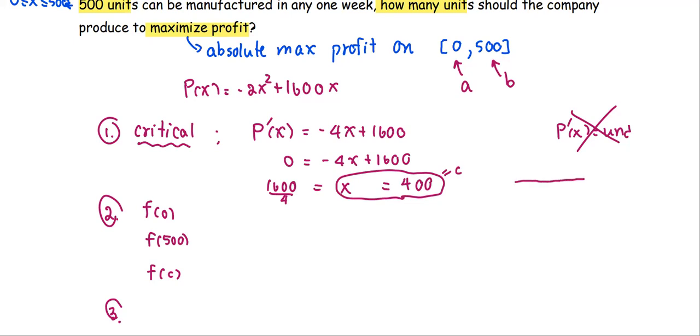To verify, is 400 between the left and right end? Yes, the left end is 0, the right end is 500. 400 is somewhere in between, so we keep 400. Next step, we are going to find the function value at each point.